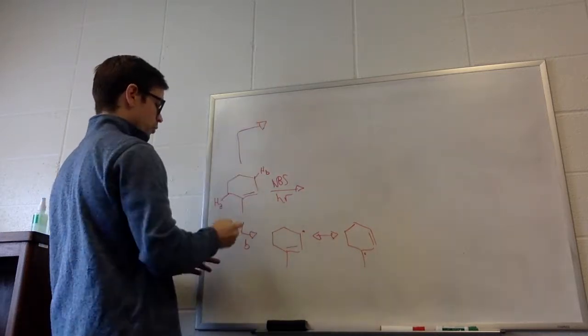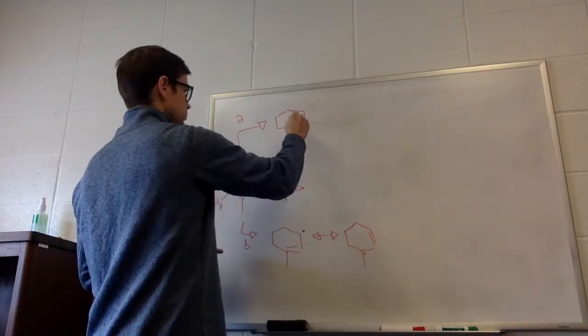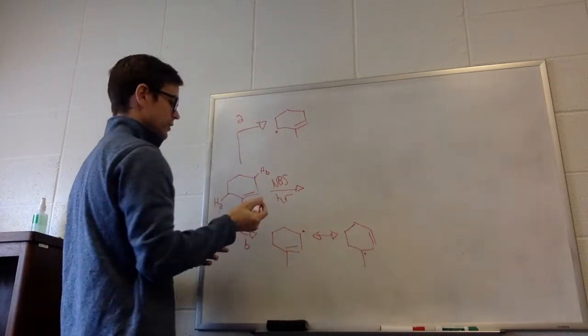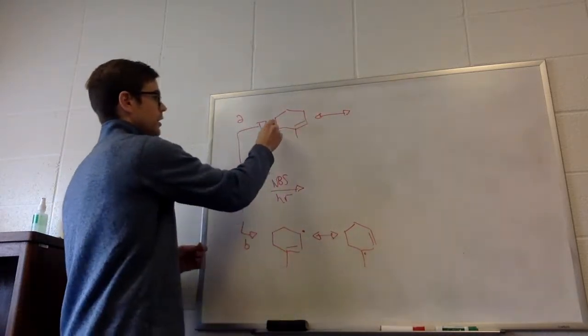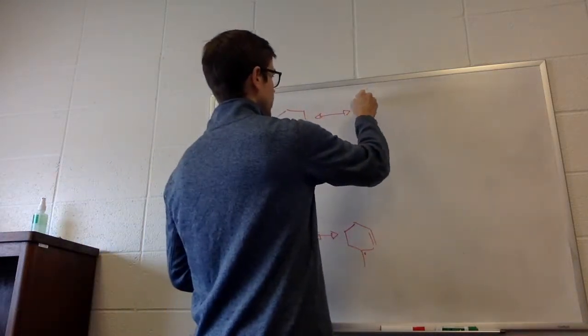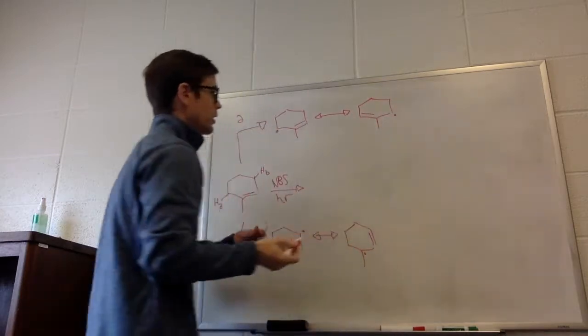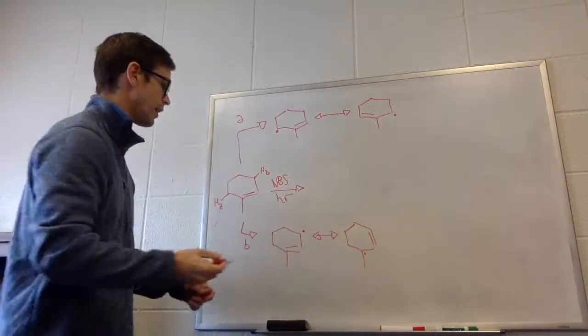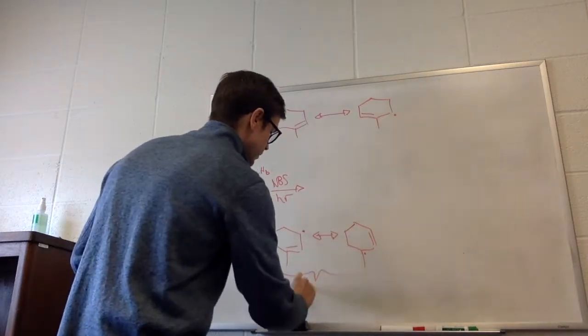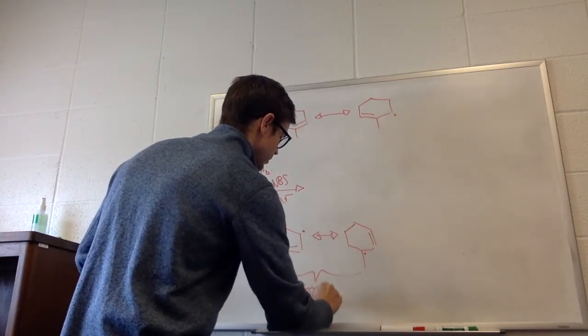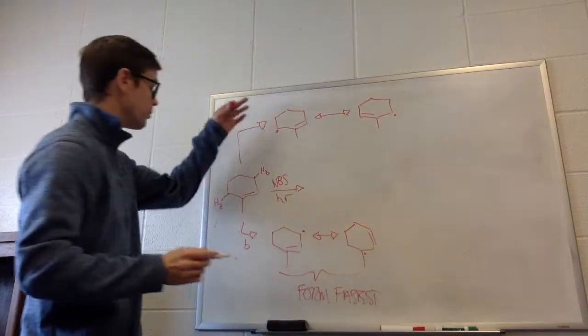If we remove HA, we're going to form this radical. It's a secondary radical that has character at this position and also at this position. So essentially we have a secondary secondary radical. Since this is a secondary tertiary radical, this one is actually going to form even faster than the one above.